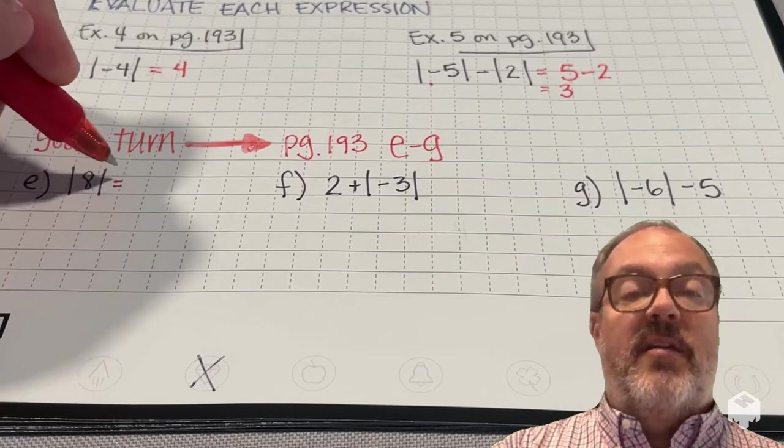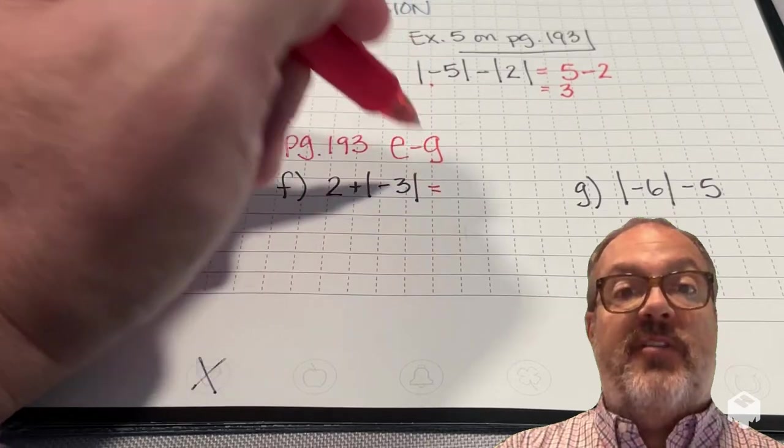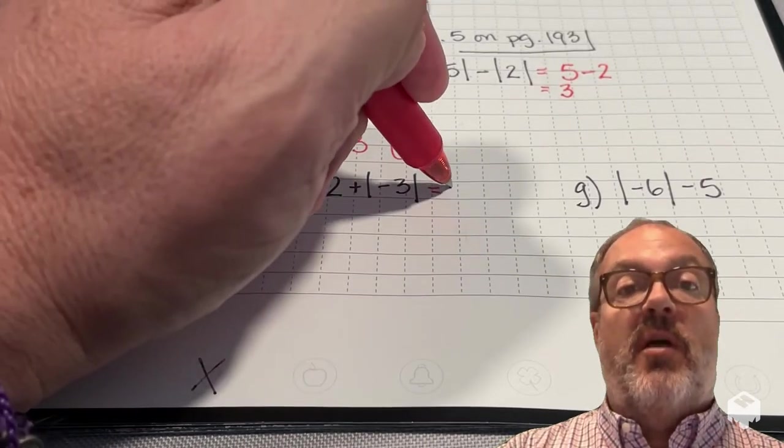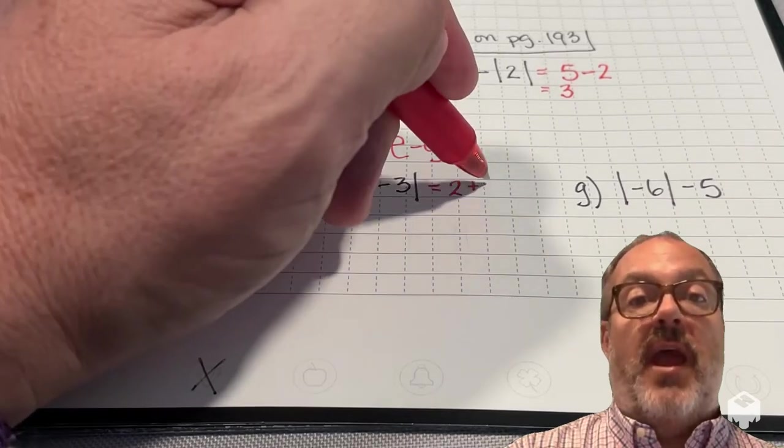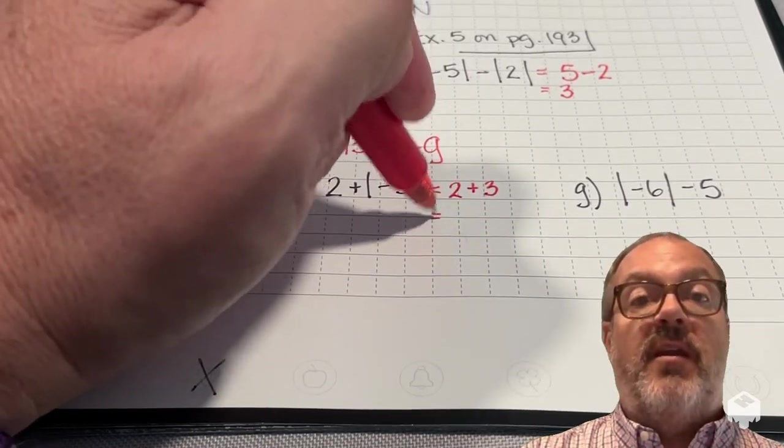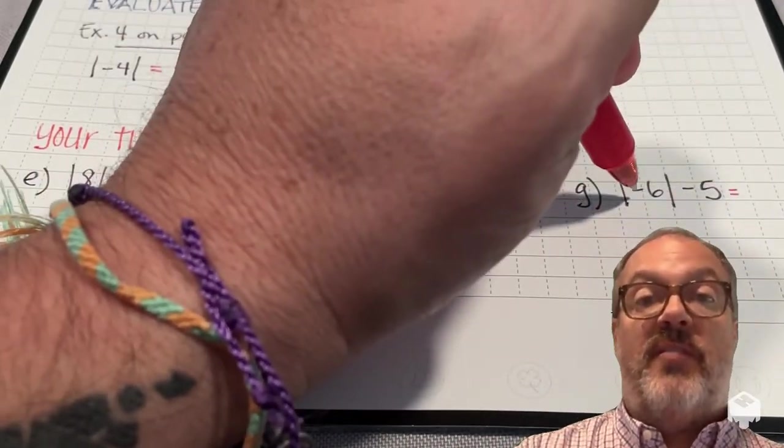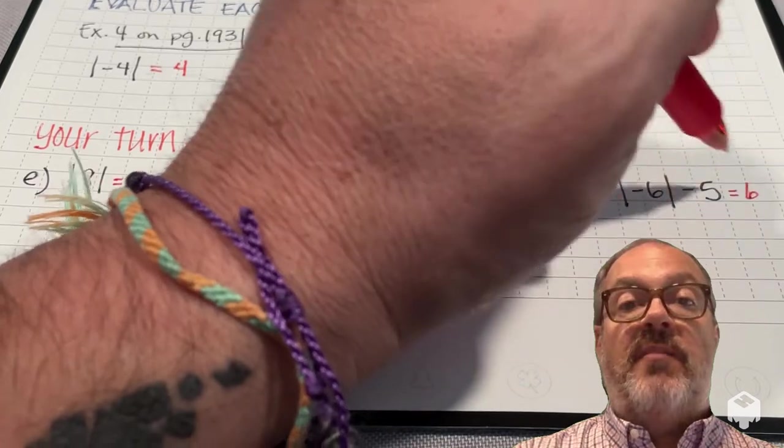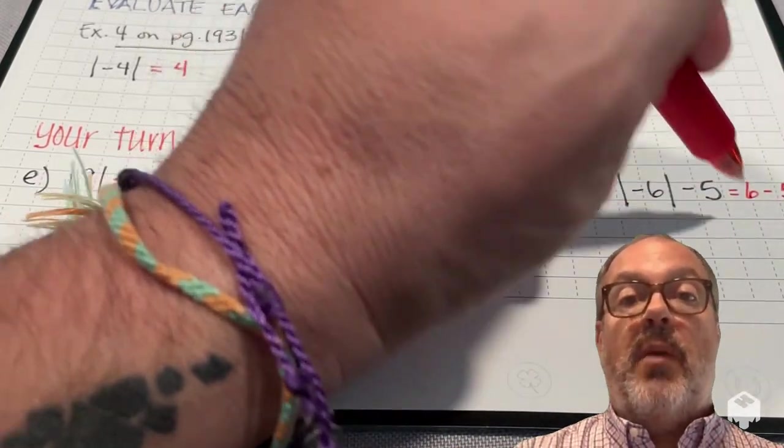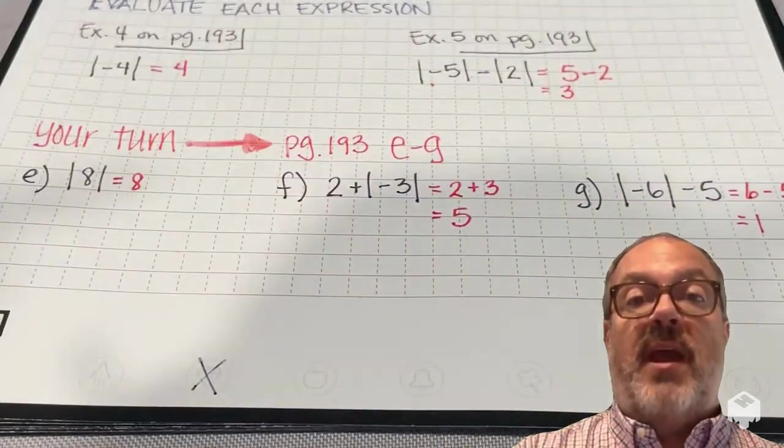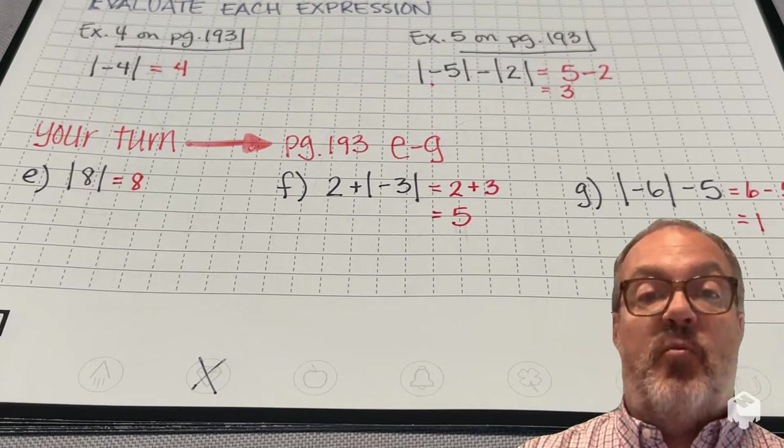All right, E, the absolute value of 8 is just 8. It's 8 units away from 0 on the number line. So here I have 2 plus the absolute value of negative 3. The absolute value of negative 3 is 3, so I get 2 plus 3 is 5. And then I have the absolute value of negative 6 minus 5. The absolute value of negative 6 is 6. 6 minus 5 is 1.